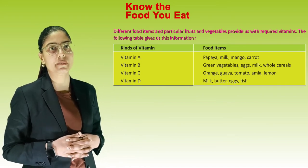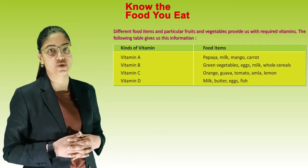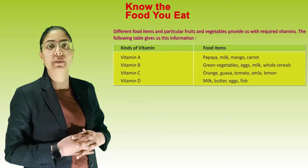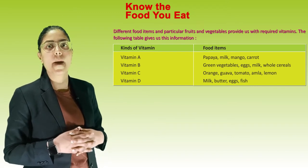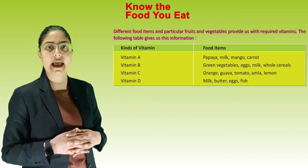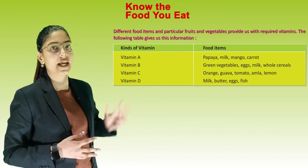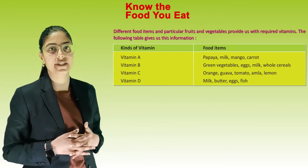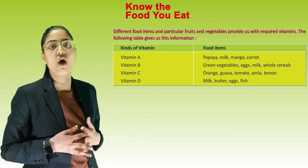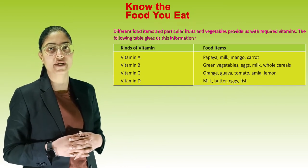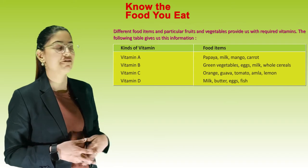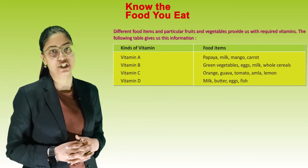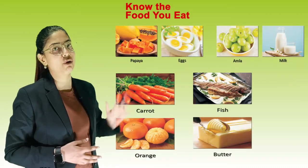Different food items and vegetables provide us with different vitamins. Vitamin A: papaya, milk, mango, carrot. Vitamin B: green vegetables, eggs, milk, whole cereals. Vitamin C: orange, guava, tomato, amla, lemon. Vitamin D: milk, butter, egg and fish.